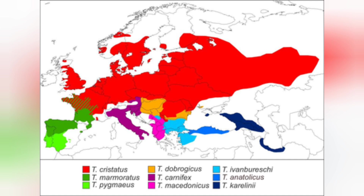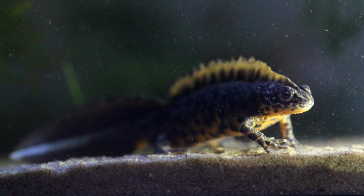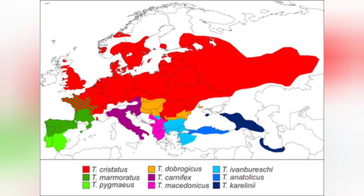There was then another split which occurred in 2016, which saw the discovery of a new species — Triturus anatolicus — that had been previously hidden within the Triturus ivanburesii group. Triturus anatolicus, the Anatolian crested newt, is actually an Asian species, found along the northern edge of Asian Turkey.